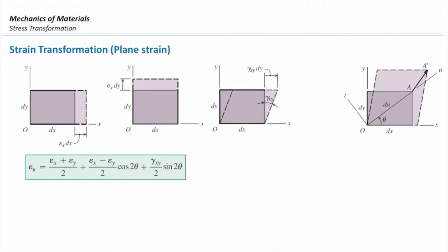This is for a strain transformation in n direction. Compare that with stress transformation in n direction. That is exactly the same. Instead of sigma here, I'm using epsilon. That's it.